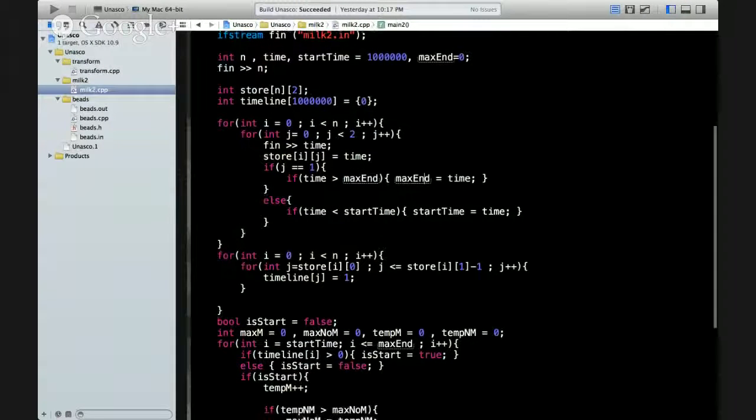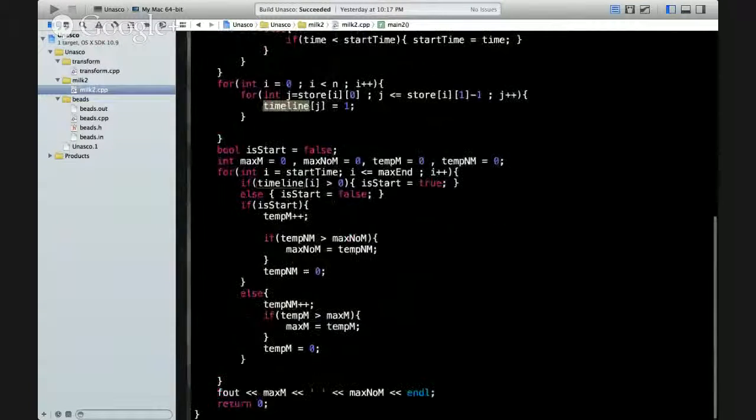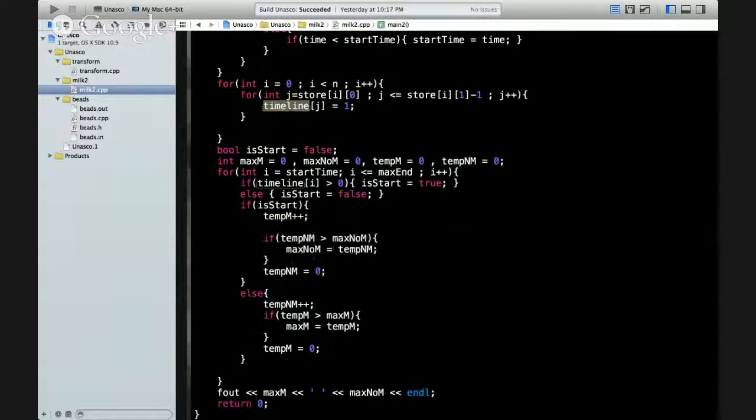After that, I'm labeling for each input on the timeline to be one, labeling the whole timeline to one. So after that, I just brute force the whole timeline to find and count the longest continuous milking time and the longest interval without milking time.